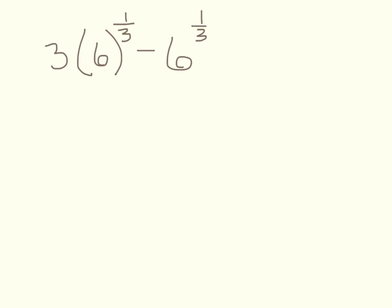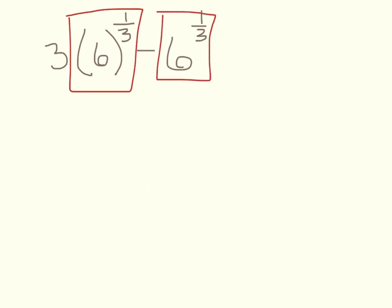Next: 3 times 6 to the 1/3 power minus 6 to the 1/3 power. Treat 6 to the 1/3 as its own entity. Like 3 dogs minus 1 dog — 3 minus 1 is 2. So the answer is 2 times 6 to the 1/3 power.